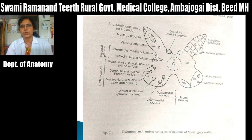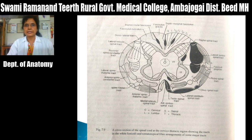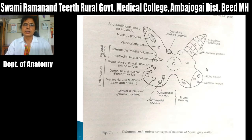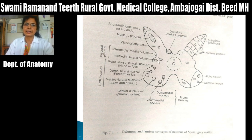In the spinal cord, centrally there is gray matter and peripherally there is white matter. This gray matter is present in the form of H and is mainly made up of cell bodies of neurons. In the spinal cord, this gray matter is divided into nuclei. The gray matter has a posterior horn which is sensory in function, anterior horn which is motor in function, and lateral horn which is present in thoracic and sacral segments and is autonomic in function.